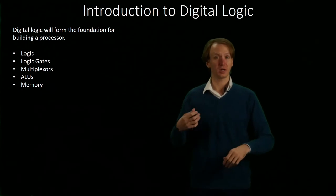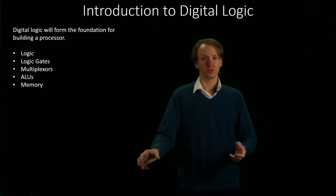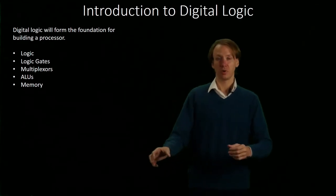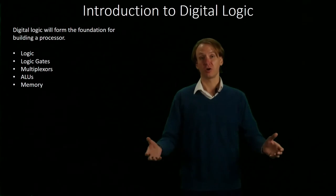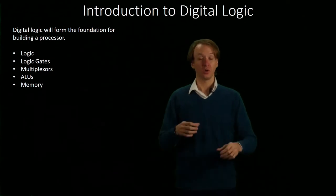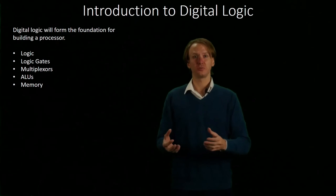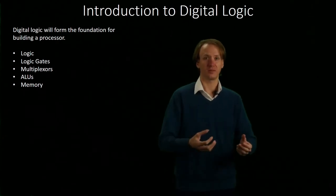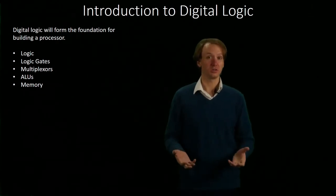We'll look at how we can build a multiplexer. A multiplexer is just a very simple device that allows us to choose one of two inputs. But we're going to need a whole lot of these when we start building our processor — there will be many places where we need to choose which of two pieces of data we're going to work with, and our multiplexer will allow us to do this.